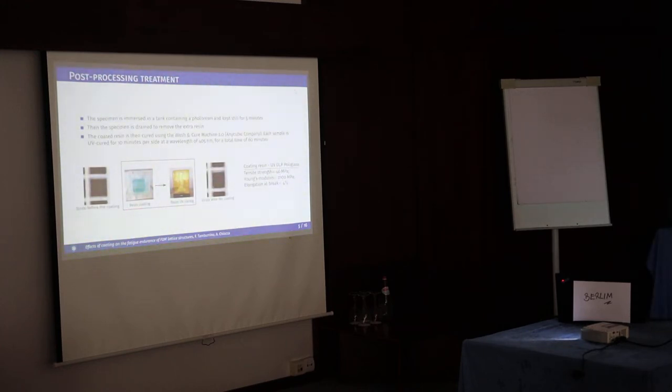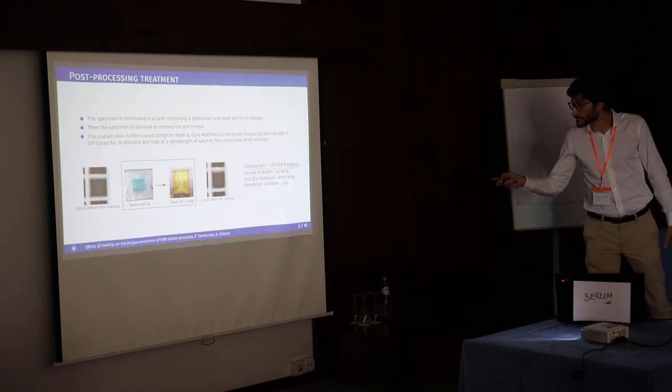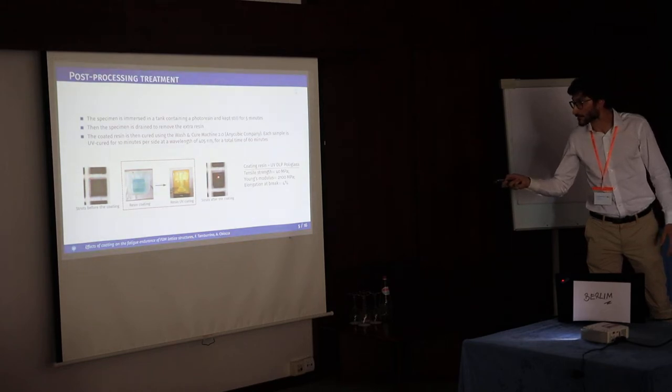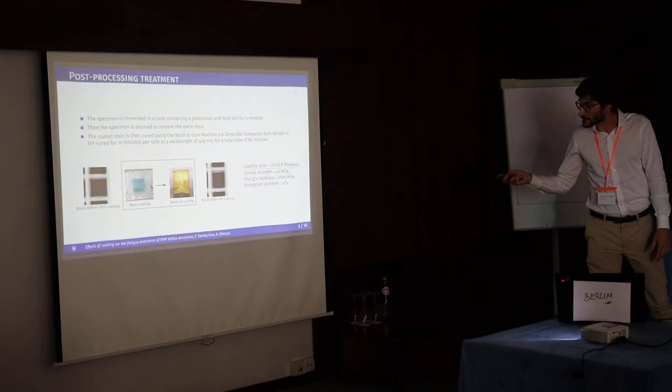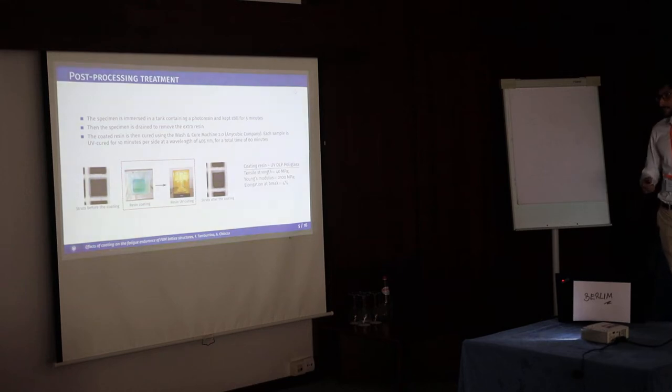So what is the aim? I spoke about coatings. What my colleague did was taking the specimen and coating it with resin. The specimen was immersed in a tank with some resin, then the resin was UV cured. It's probably difficult to see, but this is the specimen before coating and after coating - you can see a really light layer of coating. These are coating resin material properties after the curing process. They're quite similar to the base material, in this case PLA.